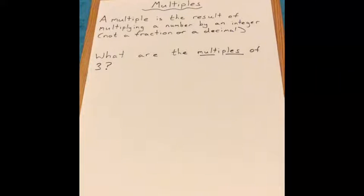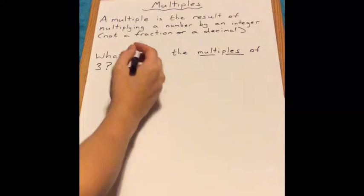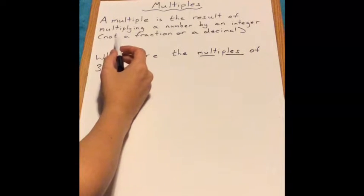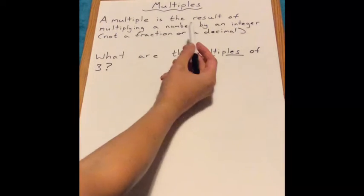What is a multiple? A multiple is the result of multiplying a number by an integer. An integer basically means any whole number. It does not mean a fraction or a decimal.